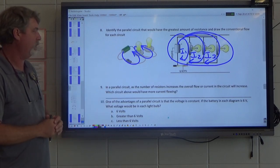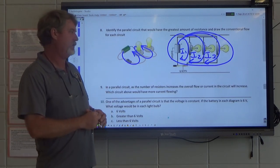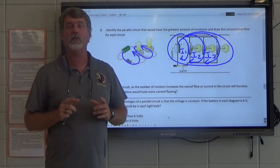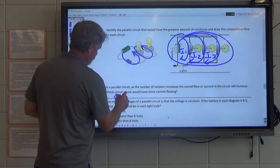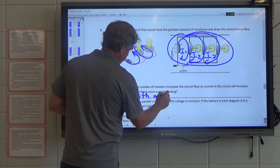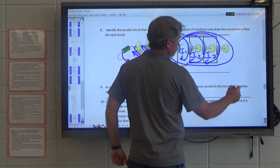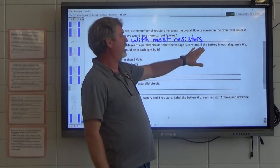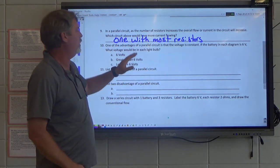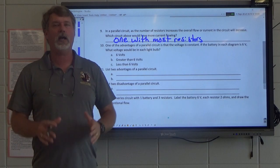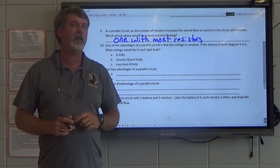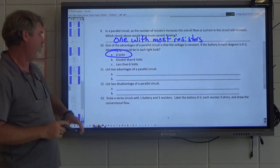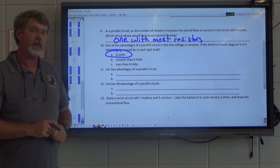So again, these questions you can work on. In a parallel circuit, as the number of resistors increases, the overall flow or current in a system increases. Which would have more current? The one with more current would be the one with the most resistors. One of the advantages of a parallel circuit is that the voltage is constant. If a battery in each diagram is six volts, what would the voltage be at each light bulb? Well, if the voltage is constant, the voltage is constant. And what do we say about your home? Every outlet has the same voltage. List two advantages and disadvantages, and so you can work on that through the online activity.